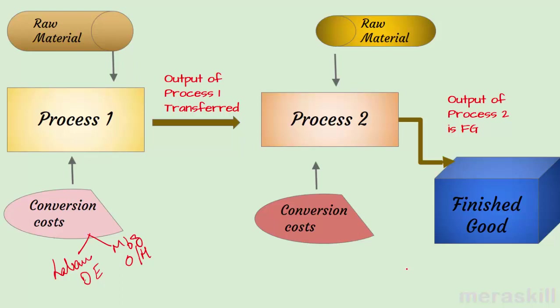If I want to know the cost, I will look at the total cost of process one — the cost of raw material plus the conversion cost. Add up all the costs, divide by the output — say 10,000 kgs of detergent — and arrive at the cost per unit.